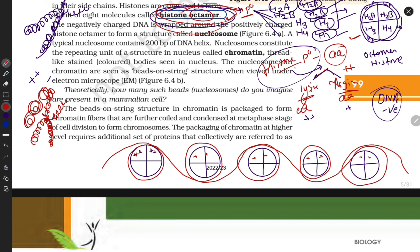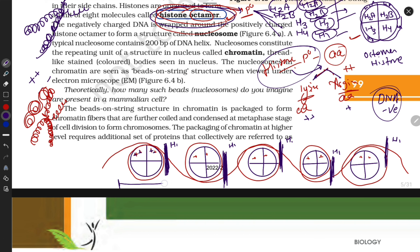If there is nothing to stop the DNA from unfolding, it can easily unfold again. So another protein is also found here — H1. Just like girls pin up their sari to keep it in place, H1 acts as that pin. H1 is not included in the histone octamer; it is outside the histone. This portion — from here to here — we call a nucleosome.